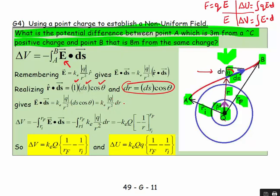So we get keQ over r² dr. Therefore ΔV equals minus the integral of E dotted with ds, which equals minus the integral of keQ over r² dr. Integrating 1/r² with respect to dr gives minus 1/r, and since ke and Q are constants, we get ΔV equals keQ times (1/rf minus 1/ri).